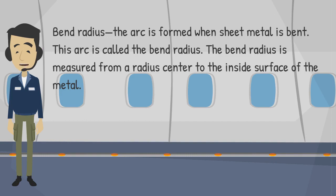Bend radius: the arc that is formed when sheet metal is bent. This arc is called the bend radius. The bend radius is measured from a radius center to the inside surface of the metal.